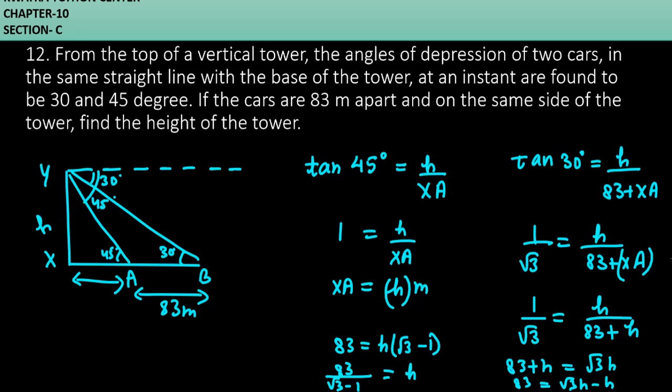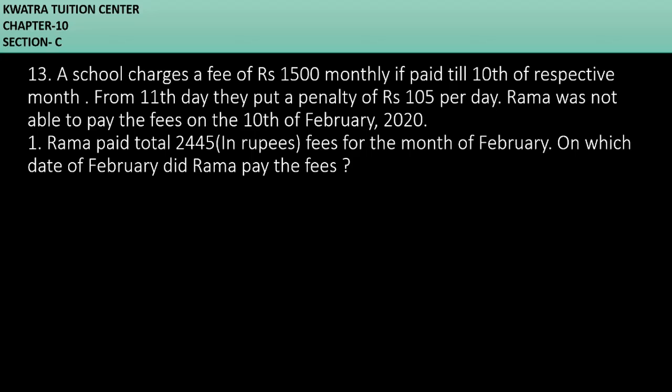83 divided by root 3 minus 1 is your answer for this question, the height of the tower. Now we'll be moving to the next question which is 13. A school charges a fee of 1500 rupees monthly if paid till 10th of respective month. From 11th day they put a penalty of 105 rupees per day. Rama was not able to pay the fees on the 10th of February 2020.